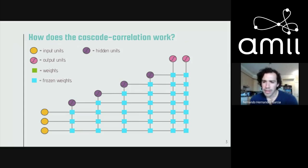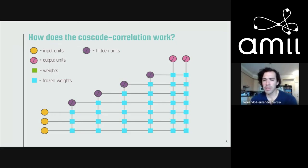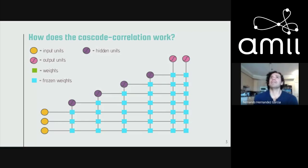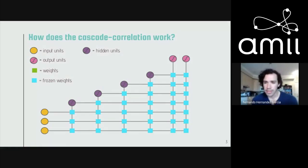Is this equivalent to gradient boosted trees? People have actually drawn analogies between cascade correlation and gradient boosted decision trees, though I haven't looked deeply into whether they're exactly equivalent. There's also a resemblance to residual networks — the skip connections are very reminiscent of ResNets — though the comparison is preliminary. It would be interesting to compare the two.